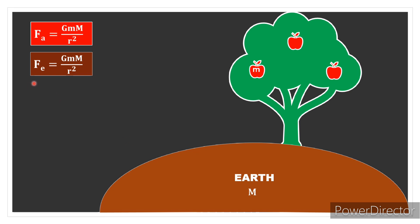But the fact is that the apple also exerts force on Earth. According to the universal law of gravitation, the force on Earth is F_e equals GMm/r², the same thing. When we look at the two equations, we find that the two forces are the same.